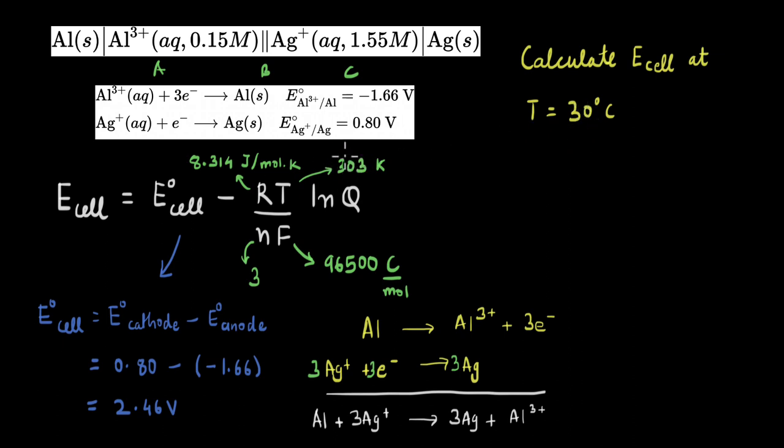We get the temperature to be 303 Kelvin. N is the number of electrons transferred, which we know from this is 3, because we multiplied 3 here. And F is the Faraday constant, and its value is given here. Now we know the values of R, T, N, and F. All that's left is to get the value of this Q.